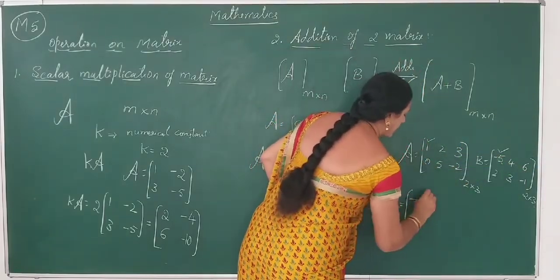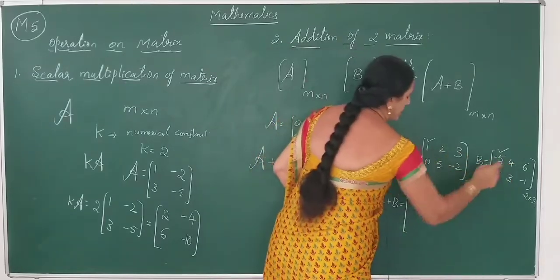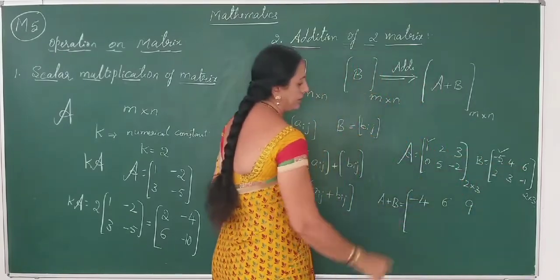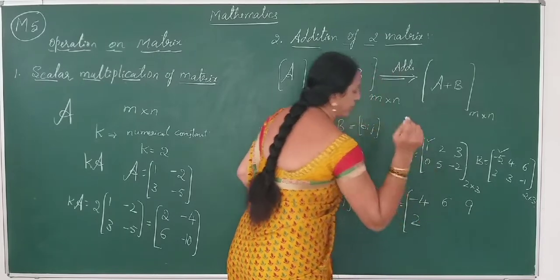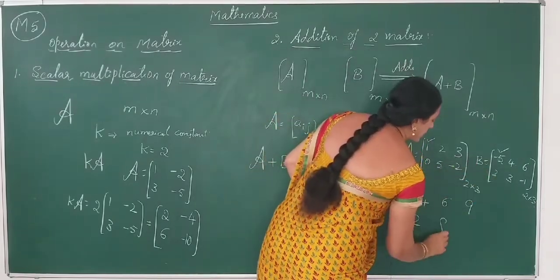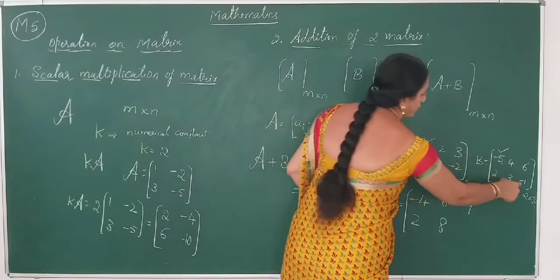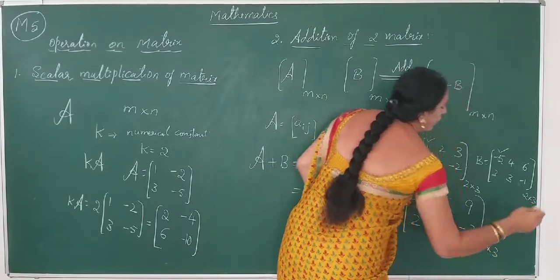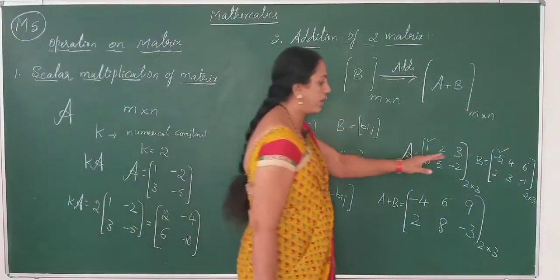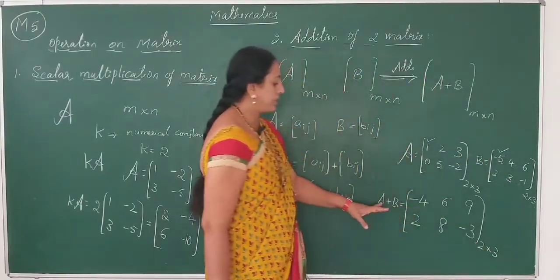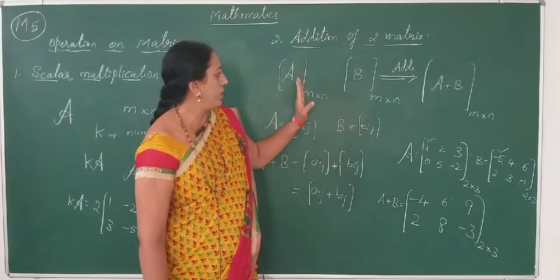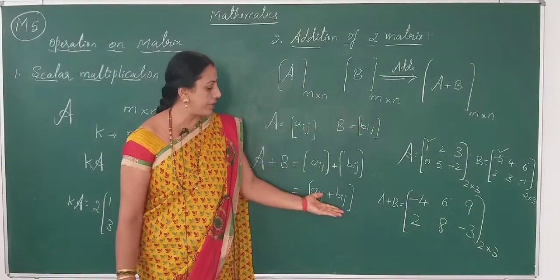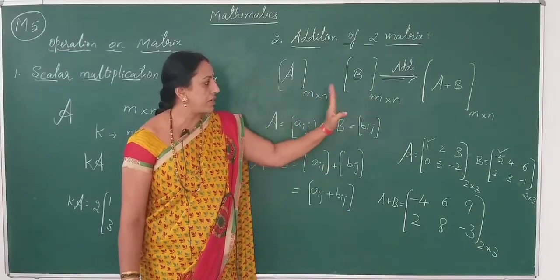The addition A+B is computed by adding corresponding elements: first with first, second with second, third with third. 1+(−5)=−4, 2+4=6, 3+6=9, 0+2=2, 5+3=8, −2+(−1)=−3. The result is also a matrix of order 2×3. In any two matrices being added, the corresponding elements are added and the matrices must have the same order.